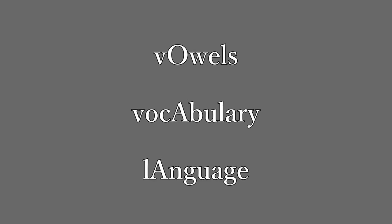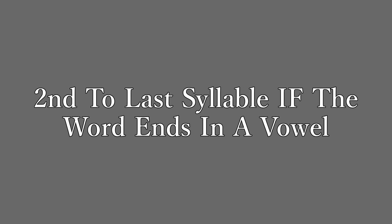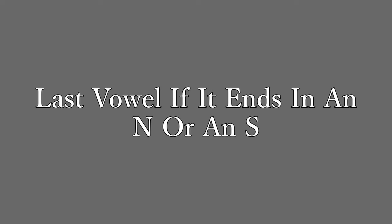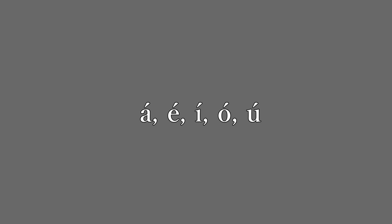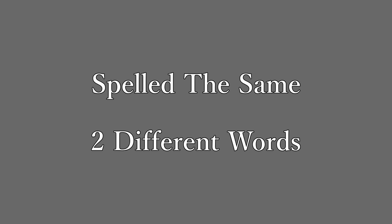Spanish is a syllable-timed language, where every syllable is roughly the same length, compared to English being a stress-timed language, where different vowels of a word are stressed more than others. A typical Spanish word puts stress on the second-to-last syllable if the word ends in a vowel — for example, humano, the Spanish word for 'human.' Or the stress is put on the last vowel if the word ends in N or S — for example, balón, the Spanish word for 'ball,' although in many other countries the word pelota is used instead. If a word doesn't apply to these rules, then the stressed vowel will gain an acute accent mark.